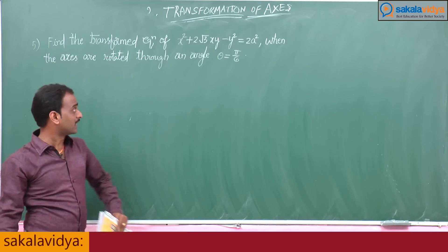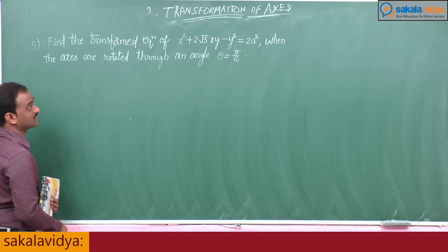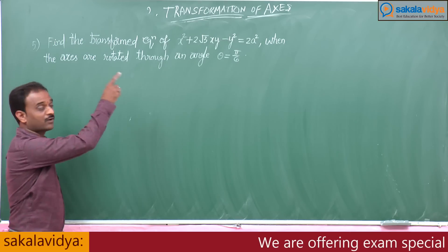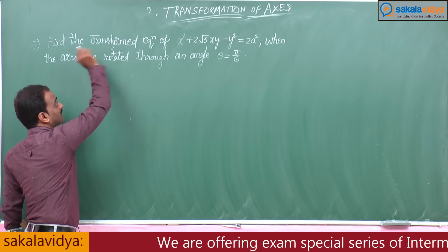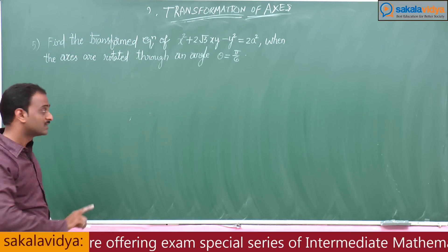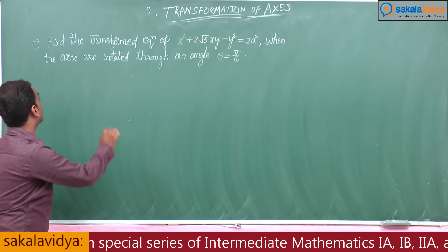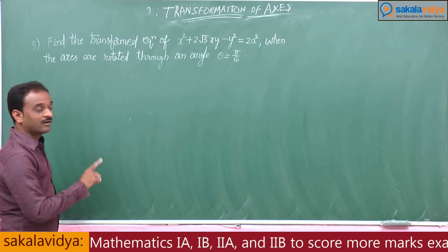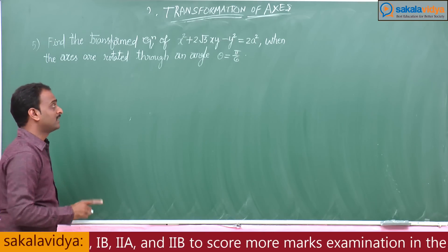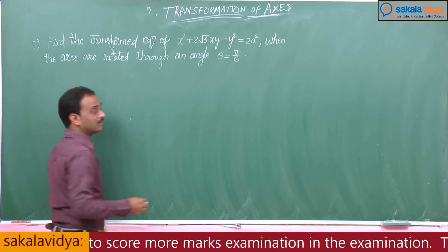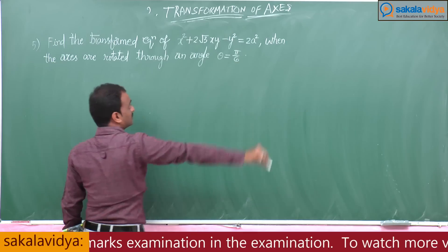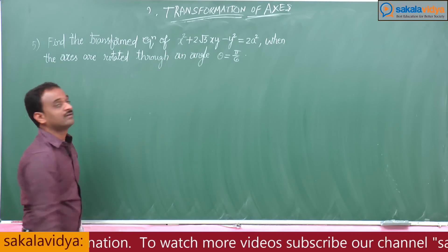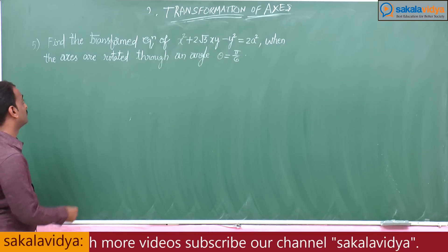When the axes are rotated through an angle pi by 6. The transformed equation is to be found. The given condition is that the axes are rotated through an angle of rotation pi by 6. From the given equation, we need to find the transformed equation.